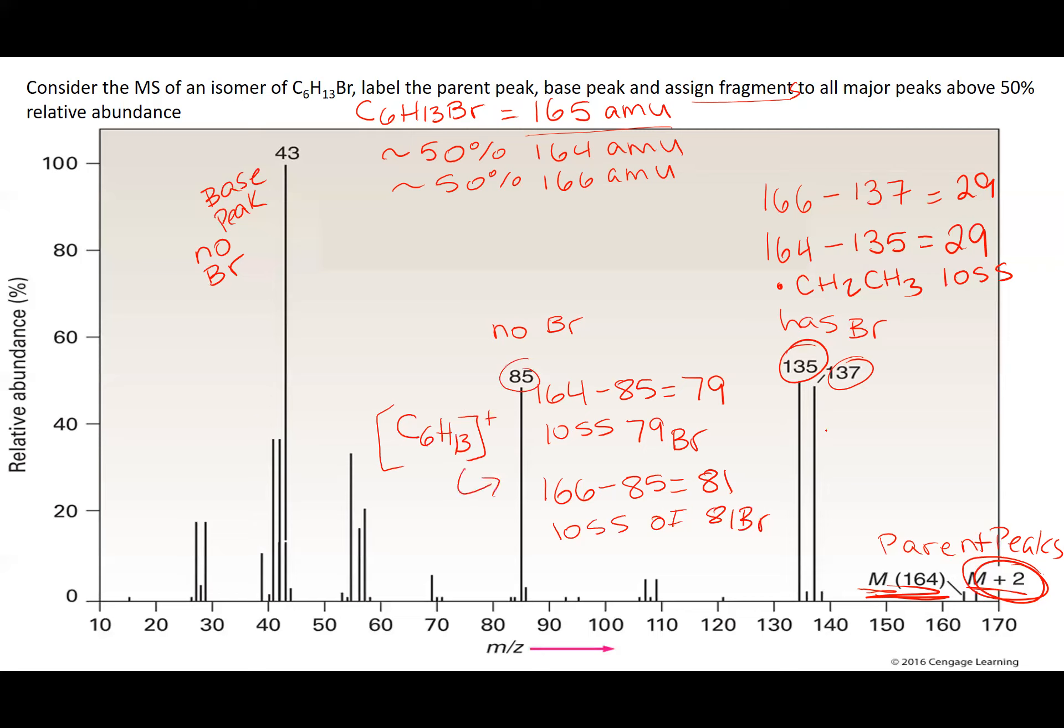And if you wanted to actually label this peak like the problem set, so this would be C4H8Br. And that's what these two peaks are, and of course it depends on what isotope of bromine.